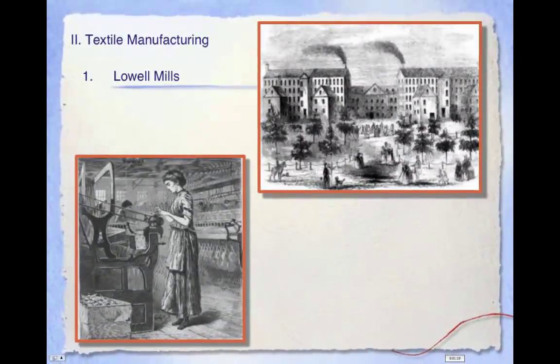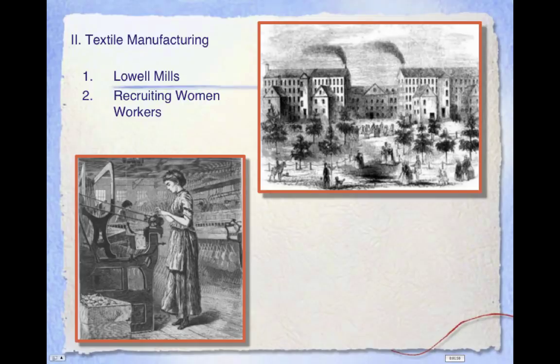Demand for cloth had outpaced artisans' abilities to meet the demand. The mills at Lowell used new machines that combined spinning and weaving to produce cloth in mass. Spinning machines took cotton and made yarn; weaving machines took yarn and produced cloth. At these mills, the vast majority of workers were women. The reason for this is that spinning and weaving had been practiced by women in their homes for centuries, so they were familiar with the product and were seen as a natural group of workers.